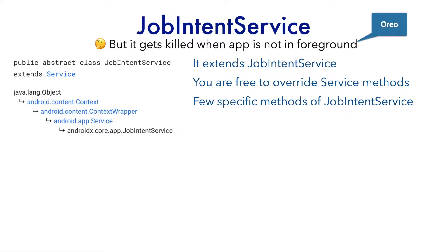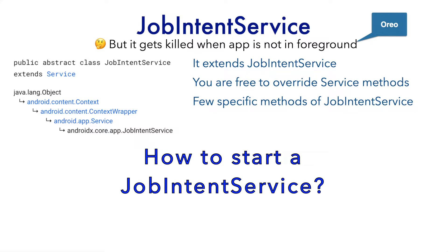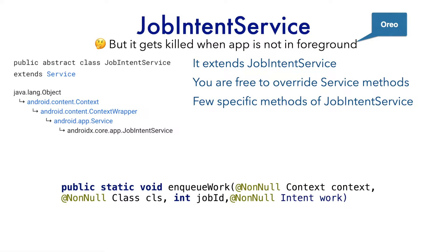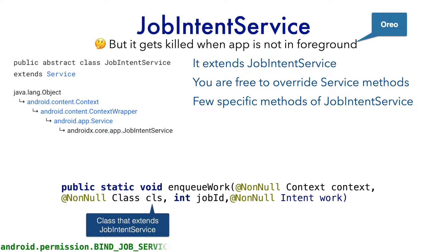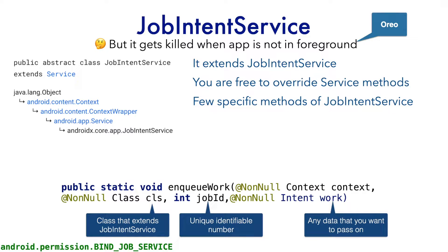The first question you would have in your mind is how do I start a JobIntentService? You have a method called enqueueWork, which is a static method. The first parameter is the usual context. The second is the class that extends JobIntentService — that needs to be passed as the second argument. When you declare it in the manifest file, don't forget to add the bind job service permission — that is very important. The next argument is a job ID, which is of integer type — just any uniquely identifiable integer number. And the third argument is the intent, so you can add any parcelable data as part of this intent and pass it on to the JobIntentService.